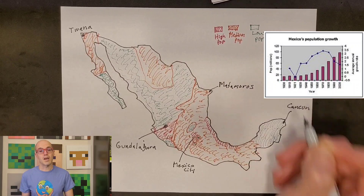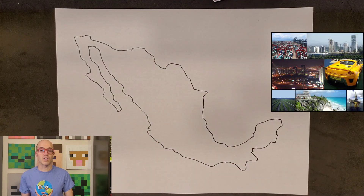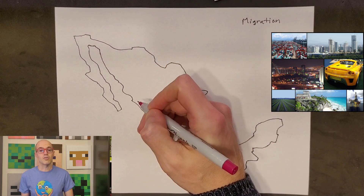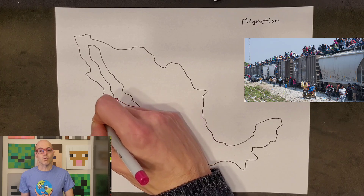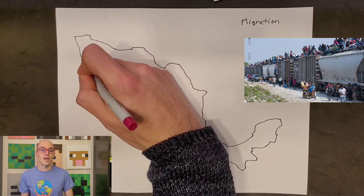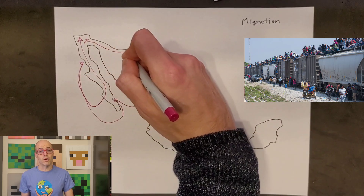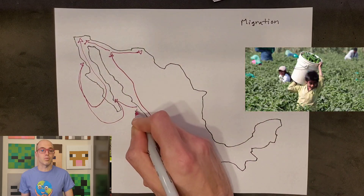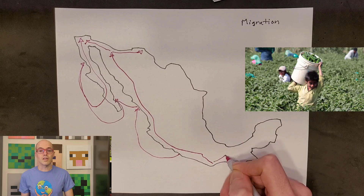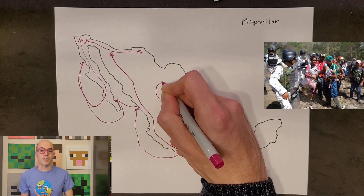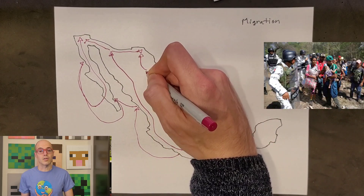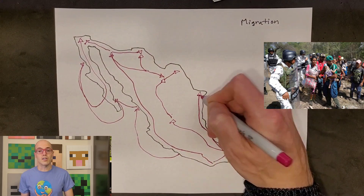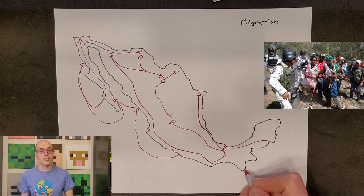Migration patterns in Mexico have been shaped by various factors including economic opportunities, political stability, and regional disparities. Historically, rural to urban migration has been significant, with people moving from rural areas to cities like Mexico City in search of employment and better living standards. Additionally, there has been a notable influx of migrants from neighboring countries, particularly Central America, seeking work in industries such as agriculture, construction, and tourism.